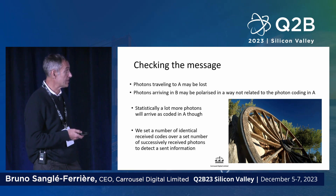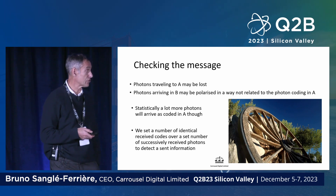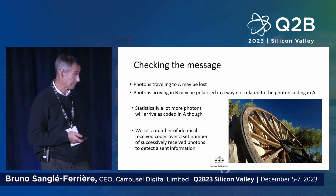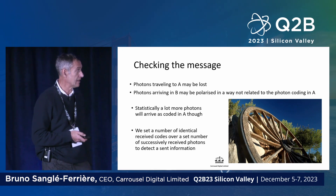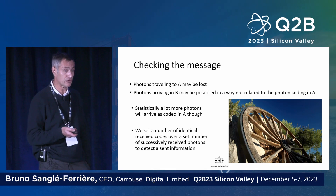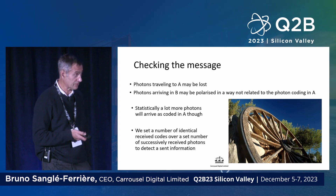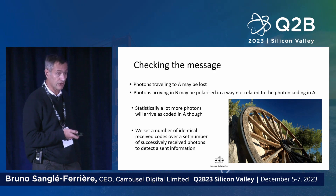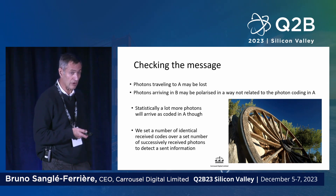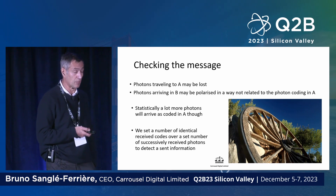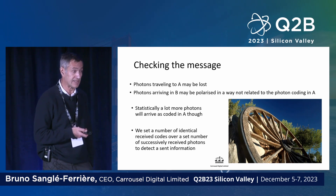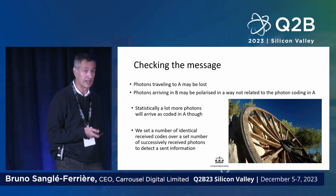So what we do is set two numbers: the number of photons we watch arriving one after the other, and then a trigger number. We say if we see, for instance, six photons out of 100 successive photons arriving with the same code, then we know that this is the code that was transmitted. We can achieve that with a good probability — with 90% loss over the line, watching 100 arriving photons, the optimal trigger number is 6, giving one chance in a million to get the code wrong.